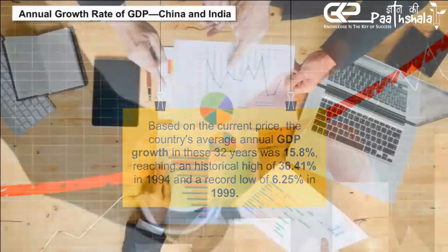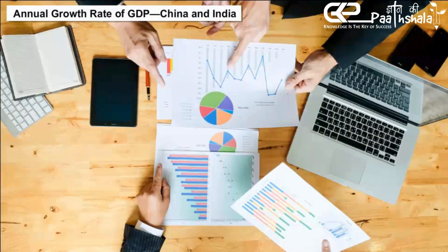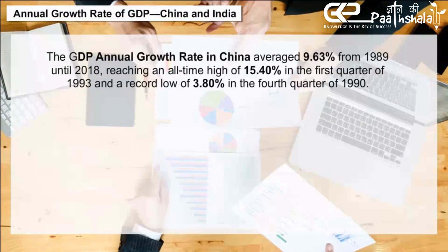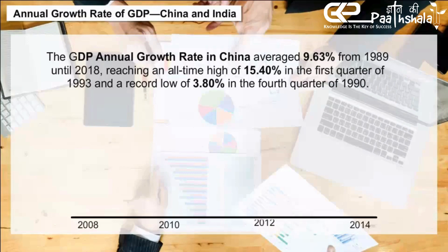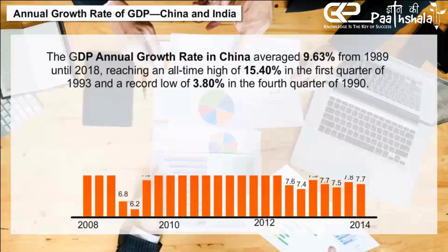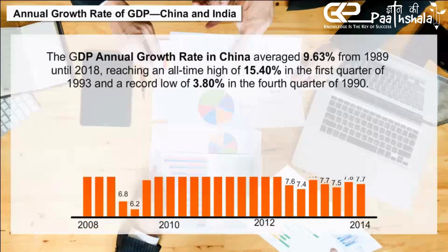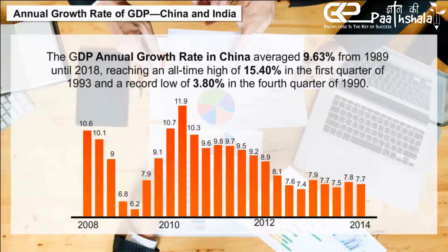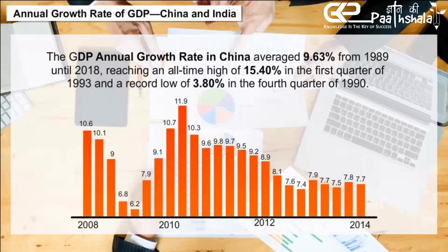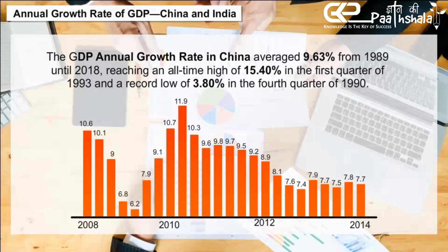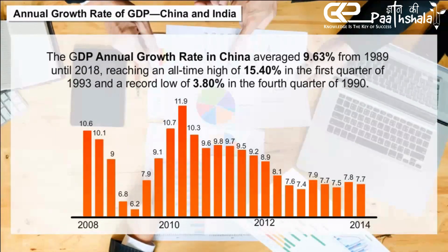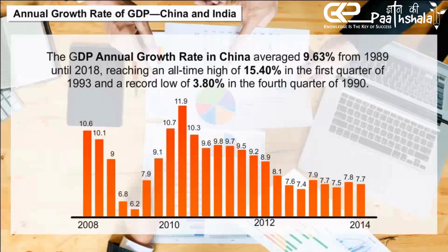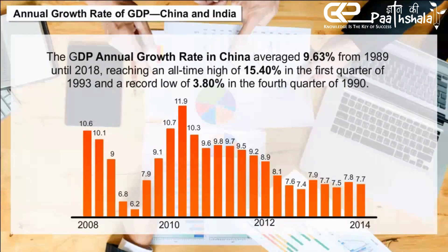Annual Growth Rate of GDP — China and India. The GDP annual growth rate in China averaged 9.63% from 1989 until 2018, reaching an all-time high of 15.40% in the first quarter of 1993 and a record low of 3.80% in the fourth quarter of 1993.